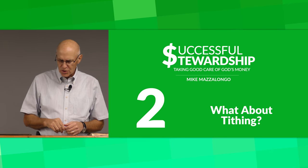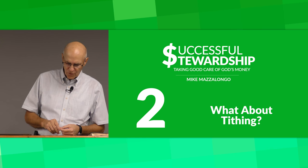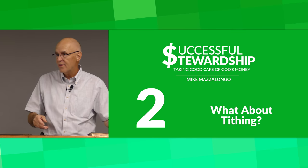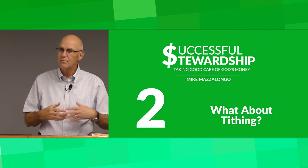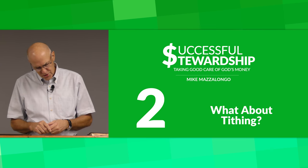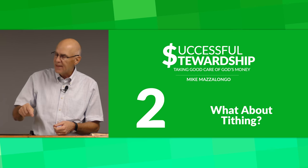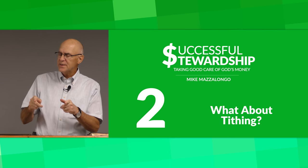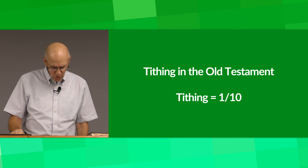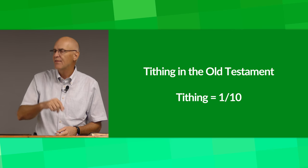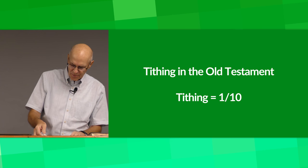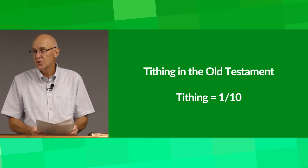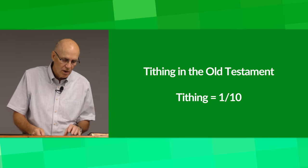A lot of denominations use the word tithing when they refer to their giving of money to the church. The word refers to the Old Testament practice of giving one tenth of their produce, cattle, and everything else to support the priests and the Levites. The word tithe literally means one tenth — giving a tenth share of something, not necessarily in a religious context.